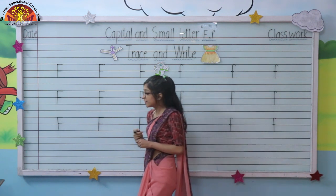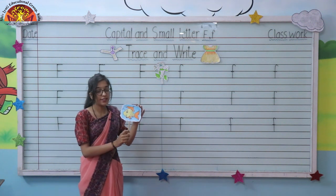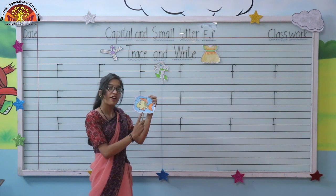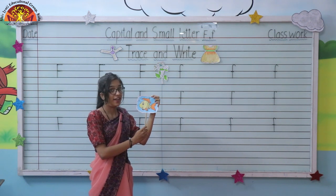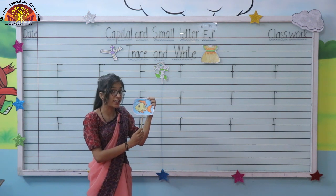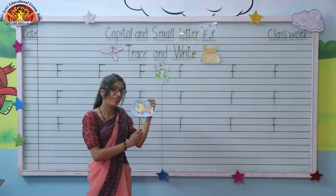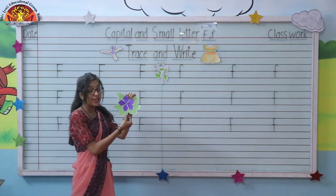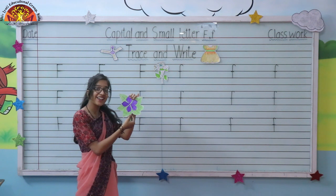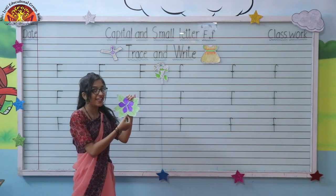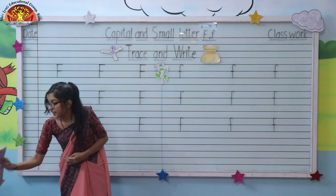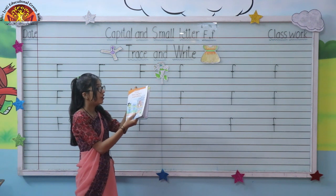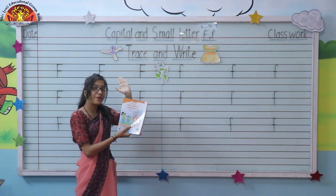Now let's see some objects. Tell me what is this? This is a fish — F for fish. A fish lives in water. Now tell me what is this? This is F for flower. You have to complete pages 17 and 18 of your Grafalco. Till then take care — bye bye everyone.